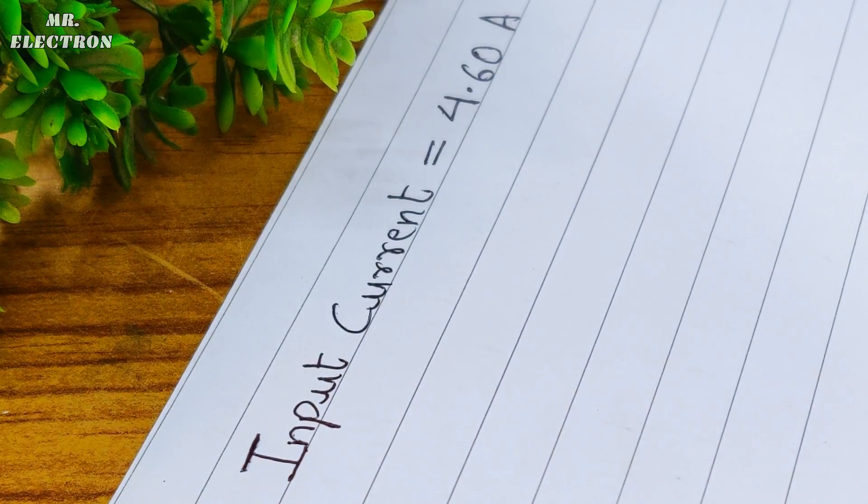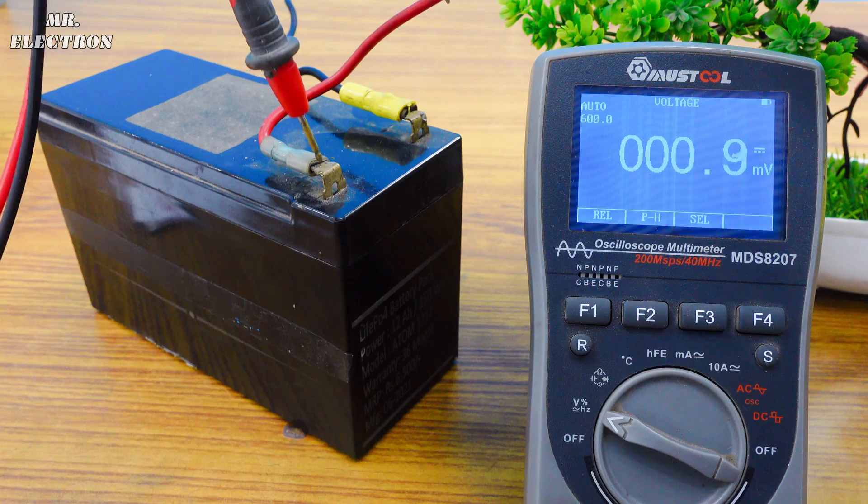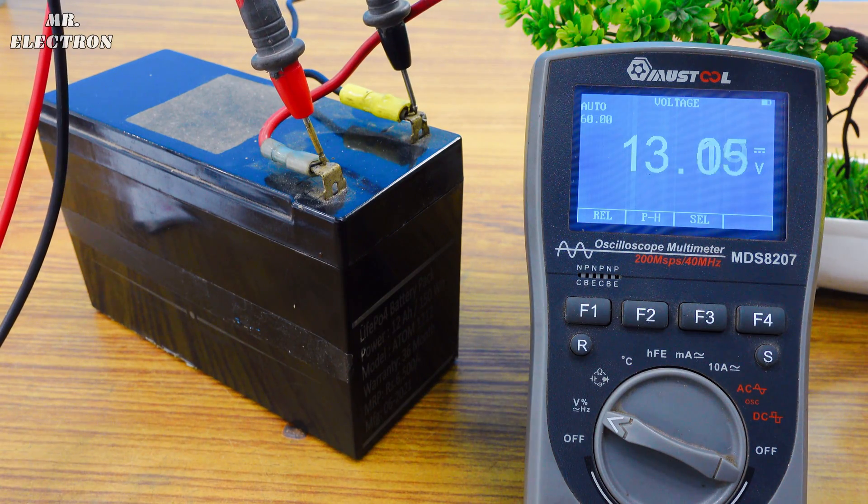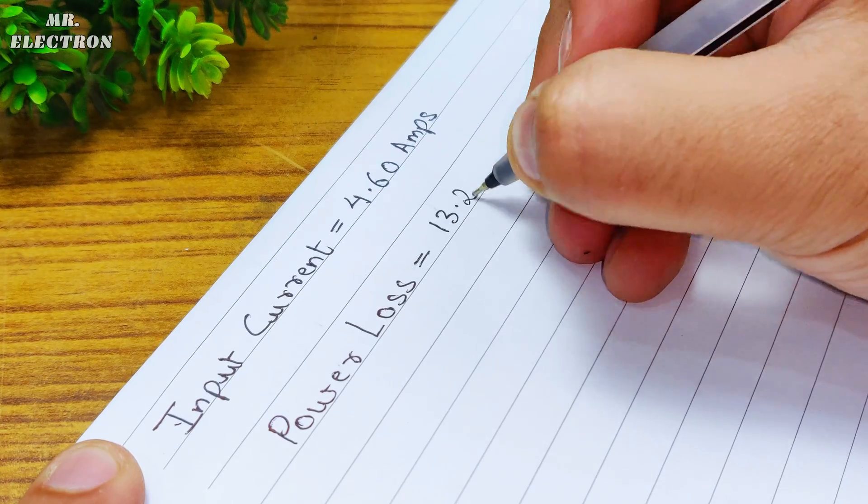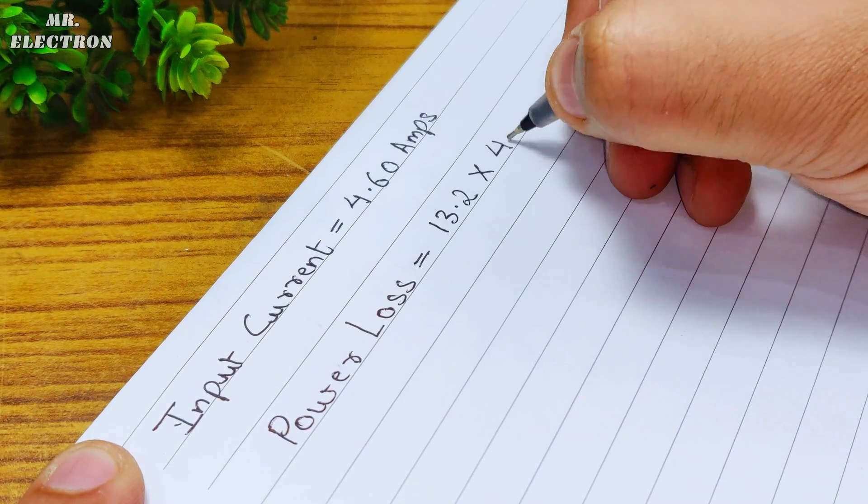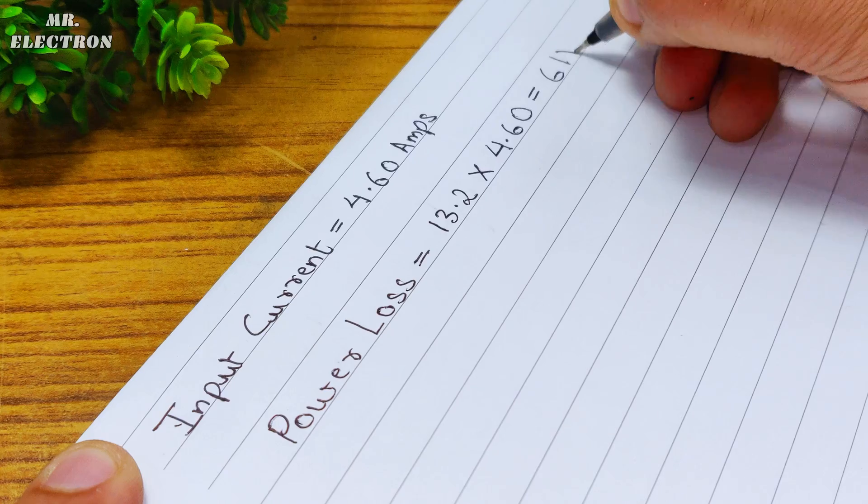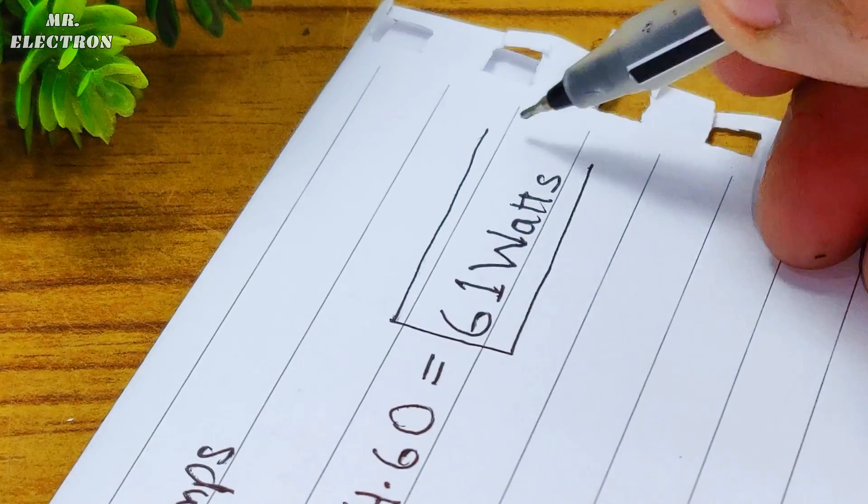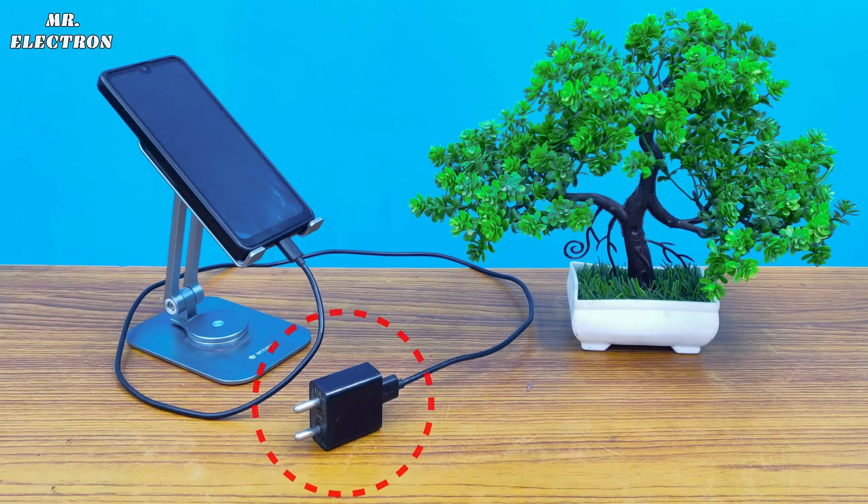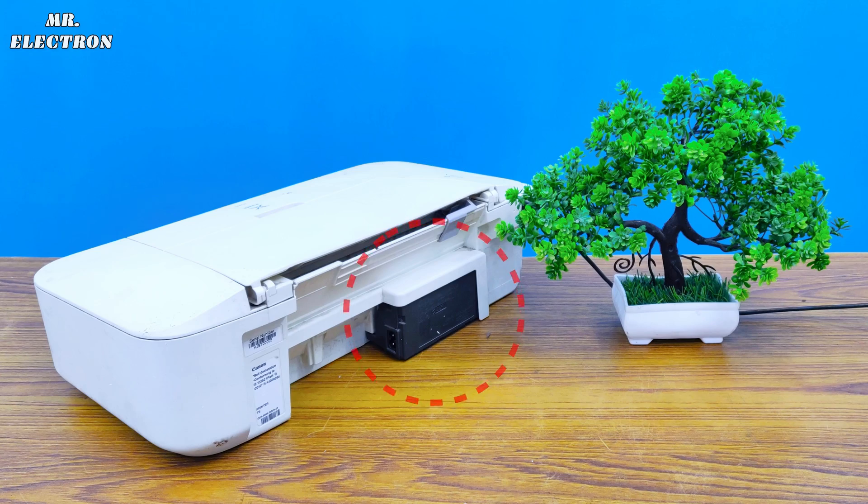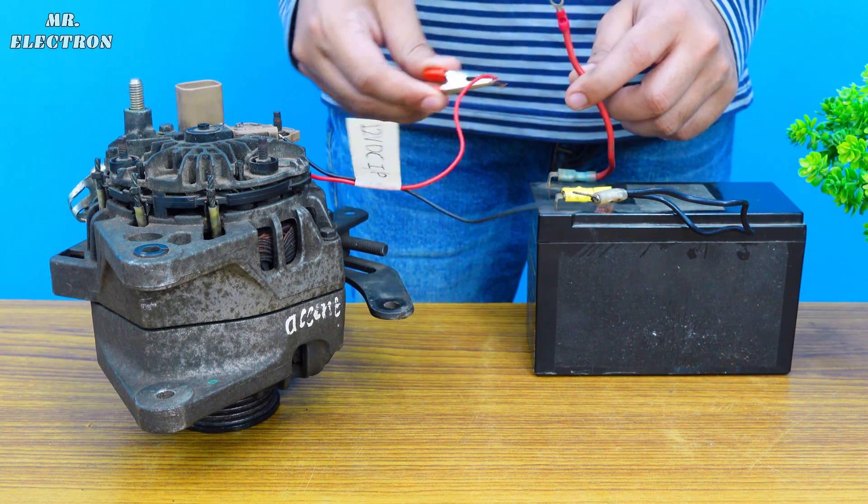Clamp this meter to one of the two wires. The meter is flashing 4.6 amperes, so let's note it down for power loss calculations. This is the current that we are feeding the alternator right now. The power loss is battery voltage which is 13.2 volts DC multiplied by current that is 4.6 amperes, making it 61 watts, which is huge as it is equivalent to the power rating of many appliances like phone chargers, soldering irons, printers, etc.